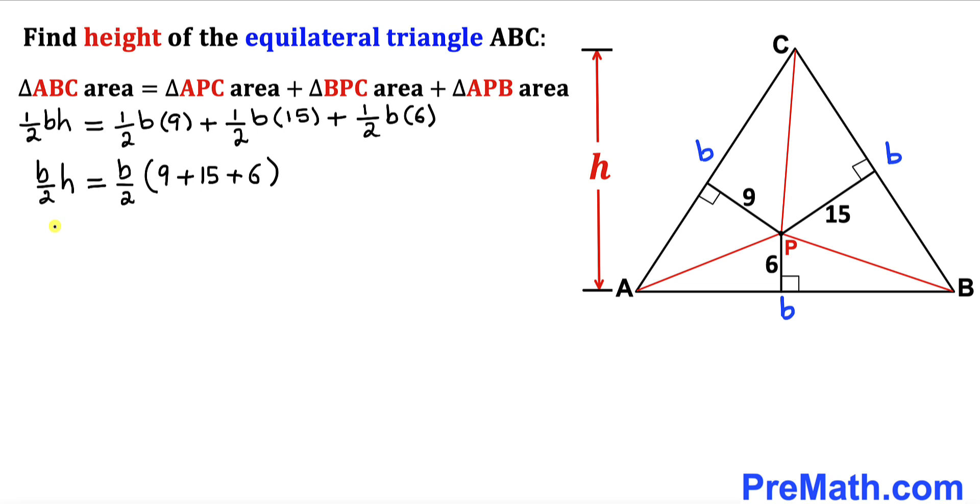So therefore this equation is going to become b divided by 2 times h equals to b divided by 2 times 30. And now let's go ahead and divide both sides by b divided by 2. On this side and over here as well, and we can see that this b divided by 2 and this b divided by 2 cancels out.